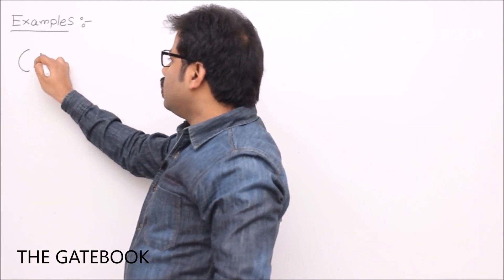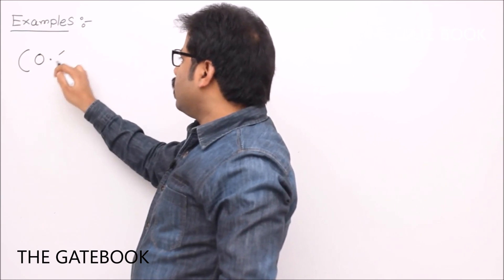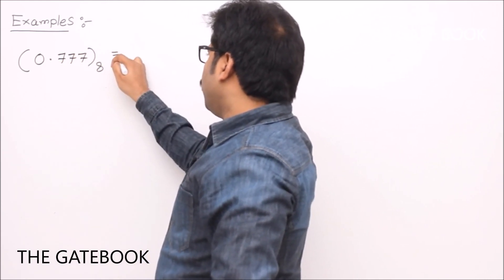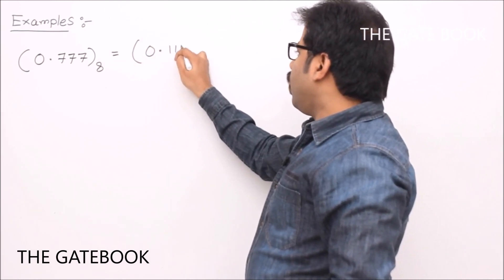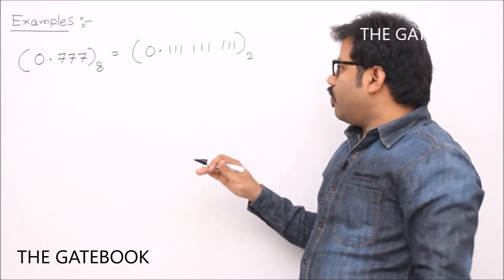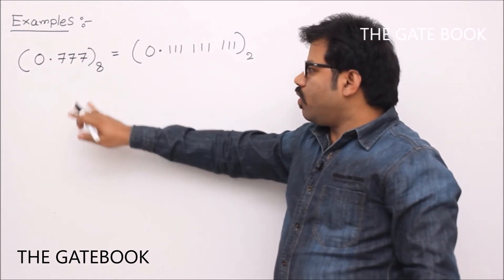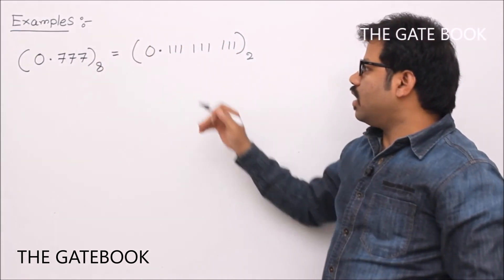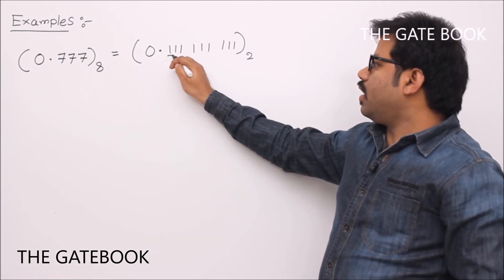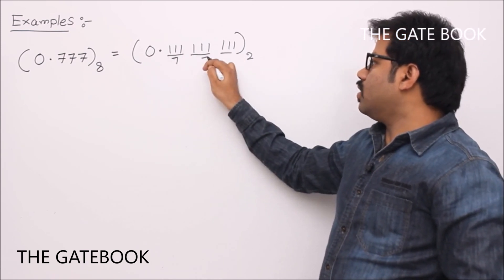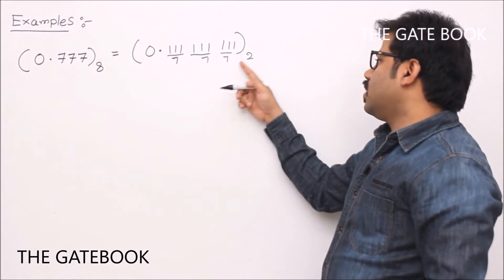If you have octal, how to convert it into binary? For example, 0.777 in octal is equivalent to 0.111111111 base 2. To convert binary to octal for fractional numbers, take from the left side, take each group of three and convert them to octal. So triple 1 is 7, triple 1 is 7, triple 1 is 7 — that's why it is equivalent to 0.777 octal.